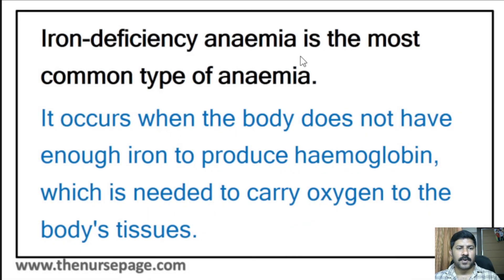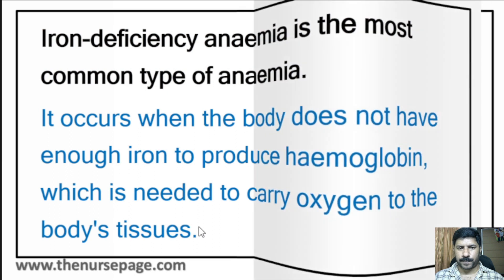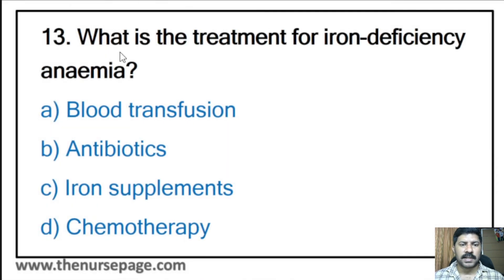Iron deficiency anemia is the most common type. It occurs when the body does not have enough iron to produce hemoglobin, which is needed to carry oxygen to the body's tissues. As the name suggests, iron deficiency leads to less hemoglobin, which leads to anemia. Thirteenth question: What is the treatment for iron deficiency anemia? Blood transfusion, antibiotics, iron supplements, or chemotherapy?